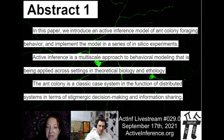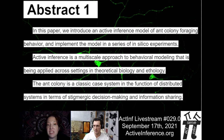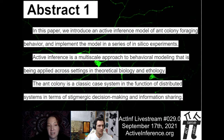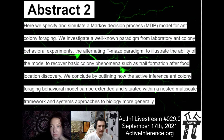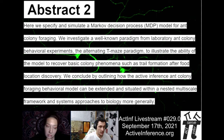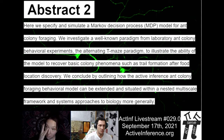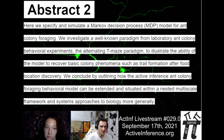In this paper, we introduce an active inference model of ant colony foraging behavior and implement the model in a series of in silico experiments. Active inference is a multi-scale approach to behavioral modeling that is being applied across settings in theoretical biology and ethology. The ant colony is a classic case system for the function of distributed systems in terms of stigmergic decision making and information sharing. Here we specify and simulate a Markov decision process model for ant colony foraging, investigate the alternating T-maze paradigm from laboratory ant colony behavioral experiments, and illustrate the model's ability to recover basic colony phenomena such as trail formation after food location discovery. We conclude by outlining how the model can be extended within a nested multi-scale framework and systems approaches to biology.